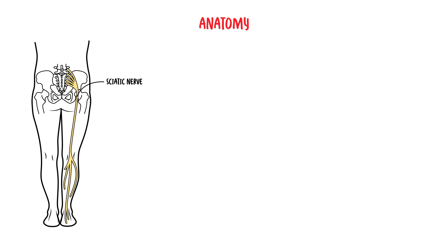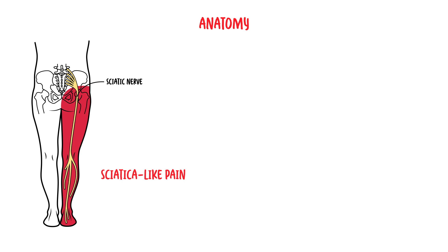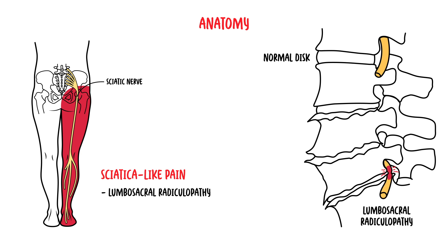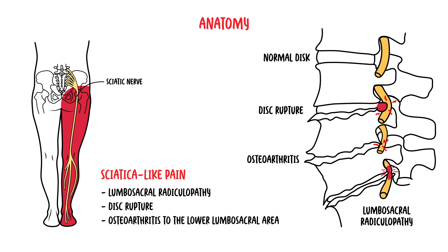The sciatic nerve runs just adjacent to the piriformis muscle. Hence, whenever the piriformis muscle is irritated or inflamed, it also affects the sciatic nerve, which then results in sciatica-like pain. In the past, many cases of sciatica were attributed to piriformis syndrome. However, most if not all cases of sciatica are due to lumbosacral radiculopathy, such as a disc protrusion at the lumbosacral spine or osteoarthritis at the lower lumbosacral area.